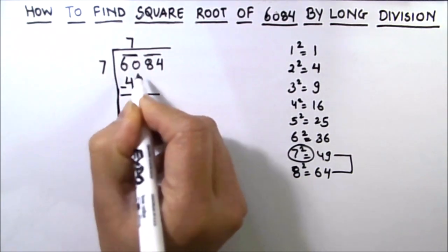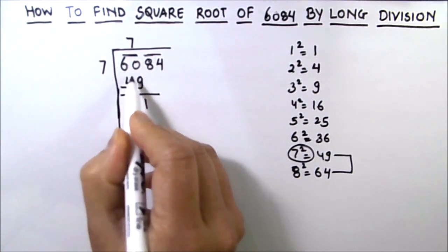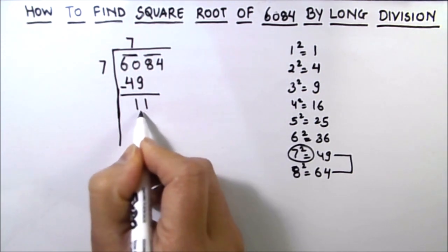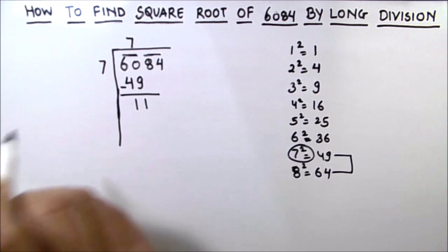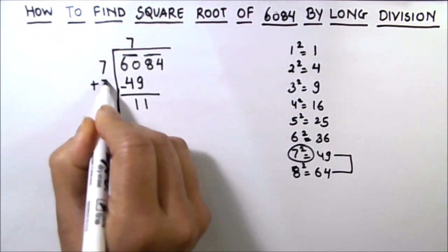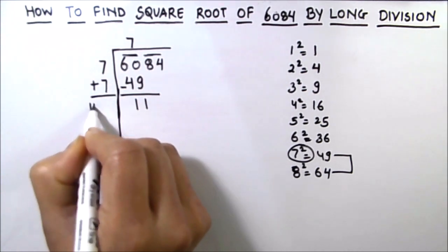We are going to subtract the two numbers. So 10 minus 9 is 1 and 5 minus 4 is 1. So we got our remainder as 11. Now the next step is to add the same quotient in our divisor. So we have 7 plus 7 as 14.